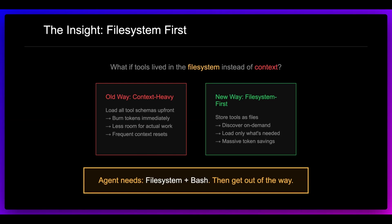If the context is at 100,000 tokens, the results you'll get versus if it had maybe just 10,000 tokens — it's going to be much less effective. We're moving to a way where we're discovering things on demand and loading only what's needed. The other great thing with this is massive token savings, which means faster applications, cheaper applications, and overall better results. Agents need file systems and bash, and you can effectively get out of the way.